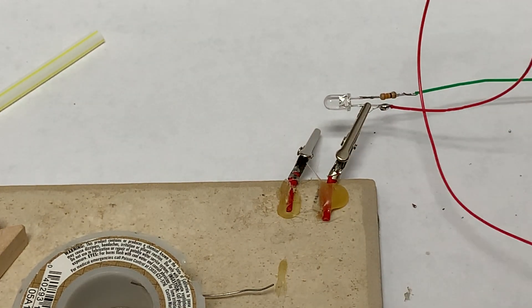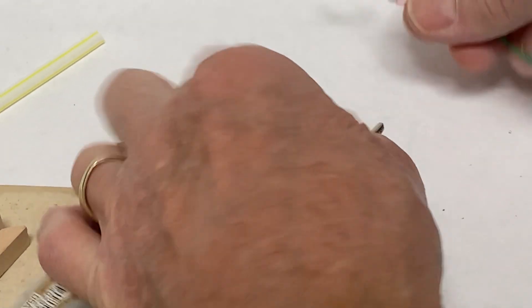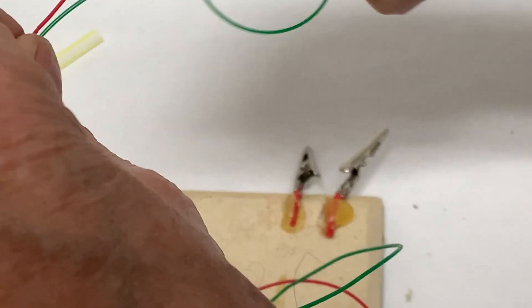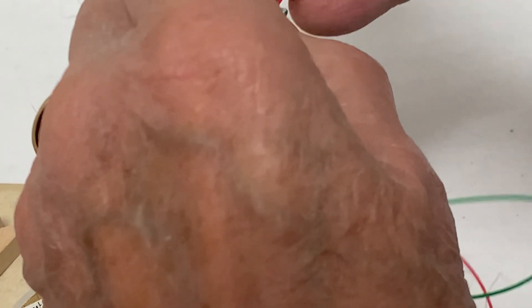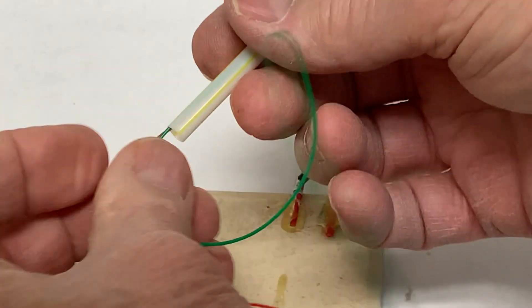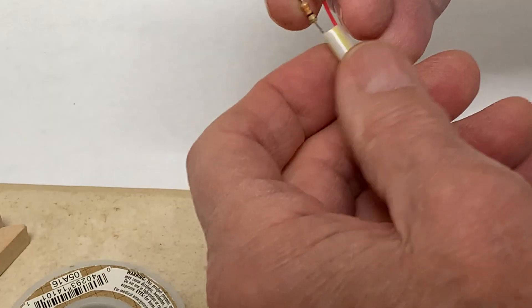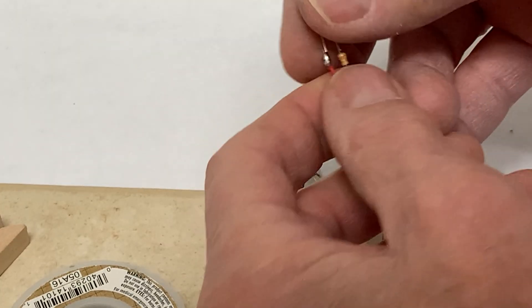When everything is done, take that assembly and feed the wires through a soda straw. Be careful that the leads don't short out.